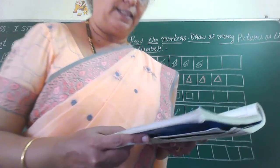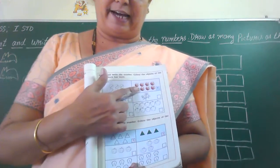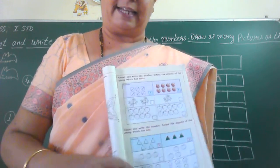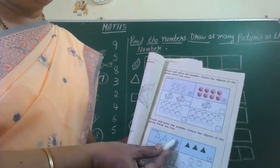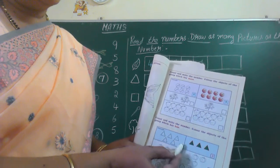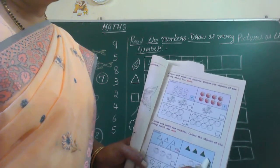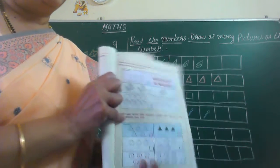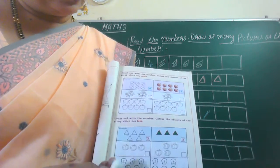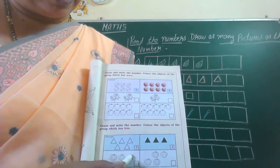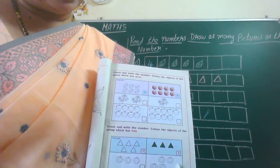Next, count and write the numbers. Colour the objects of the group which is less. Here, what we did? Which is more we coloured. Here we have to colour which is less. We'll start counting children. Triangles: one, two, three, four, five. So in the box they have written five. Here one, two, three — so it is less, there is three here. They are given one example. Which one we have to colour? Which is less we have to colour. Now count: one, two, three. So write three here. Next: one, two, three, four. So write the number four here. Which we have to colour now? Which is less? This is three and this is four — this one you have to colour.